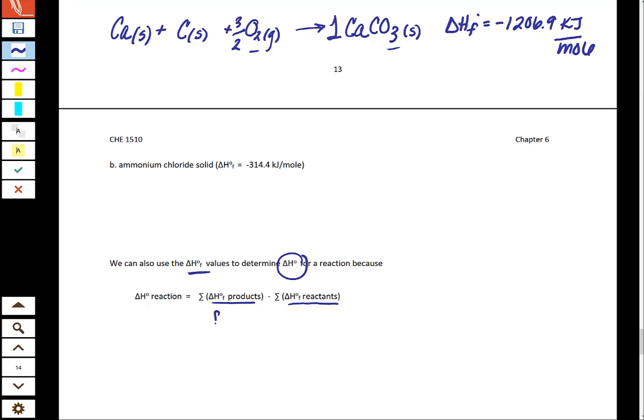Remember, products are like your final, and reactants are like your initial. And whenever we see delta, that's changing, and it's always final minus initial.